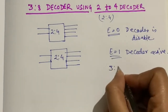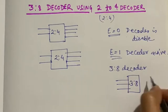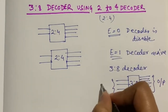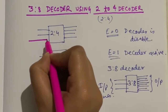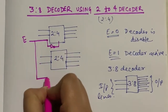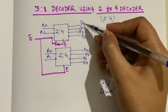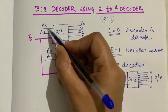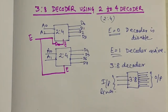A 3-to-8 decoder needs 3 input lines and 8 output lines. In this diagram, we add one enable line. The first decoder's enable goes through a NOT gate (E-bar), and the second decoder's enable receives E directly. Outputs are named D0 through D7, and inputs are A0 and A1 — the same lines are shared between both decoders.